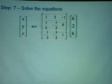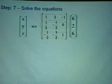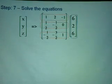So finally, to solve the equation, we will use the formula: x, y, z equals the inverse of matrix A times matrix B, which is six, two, six. From here, you take row times column.